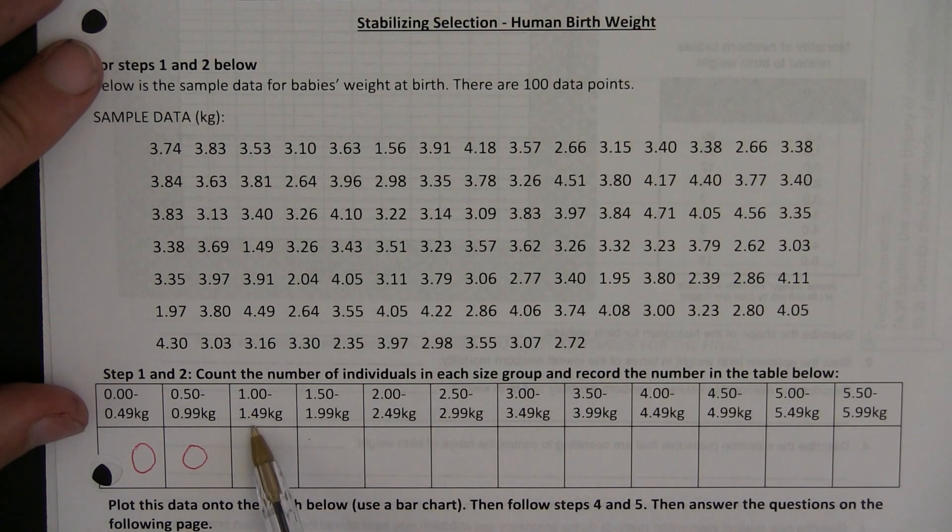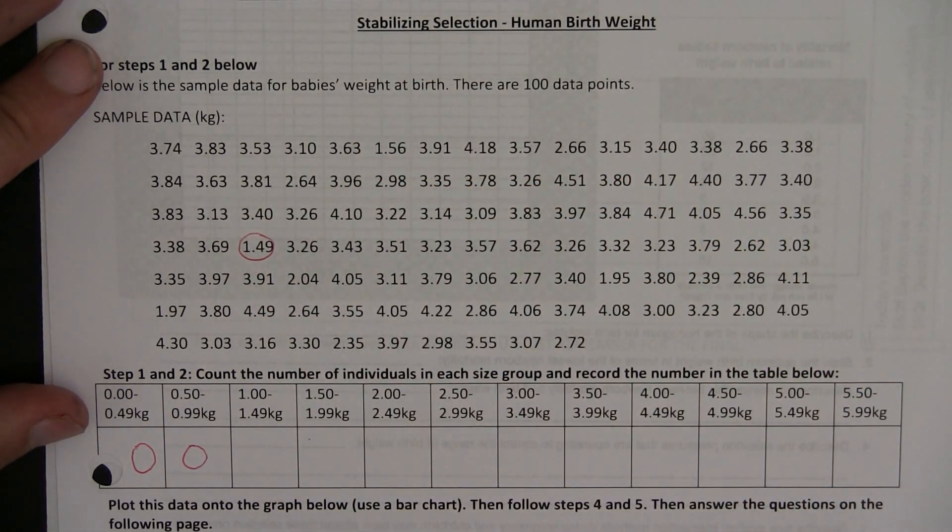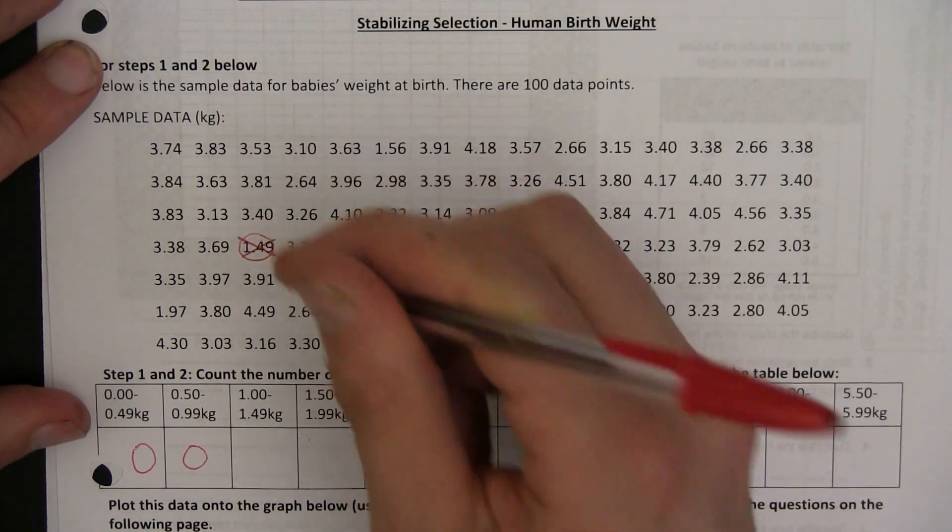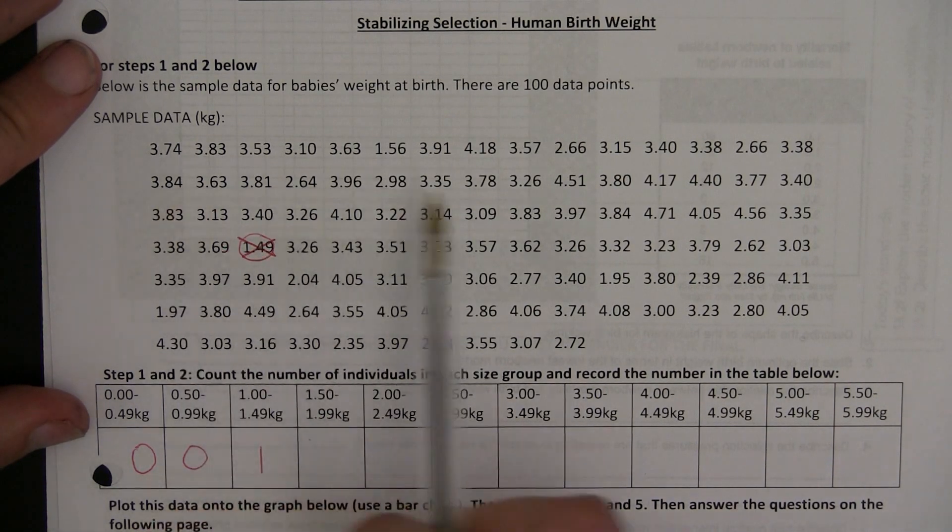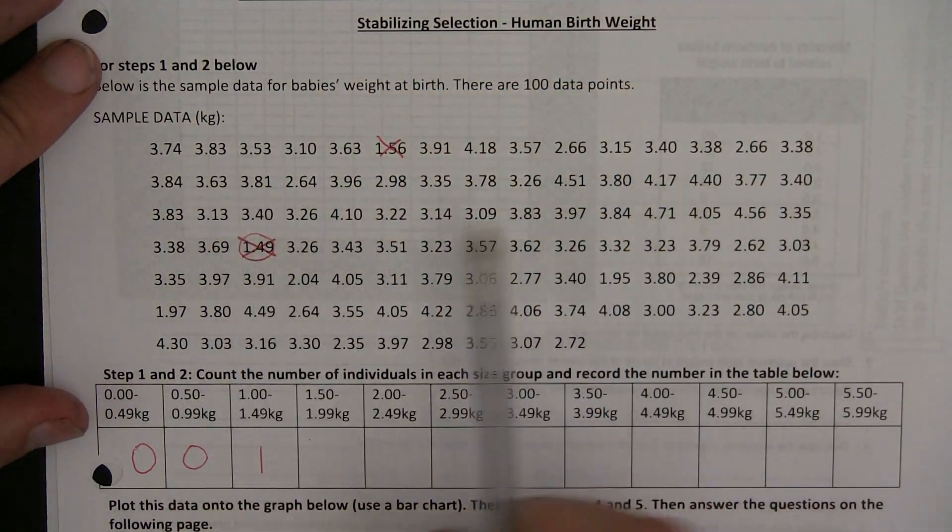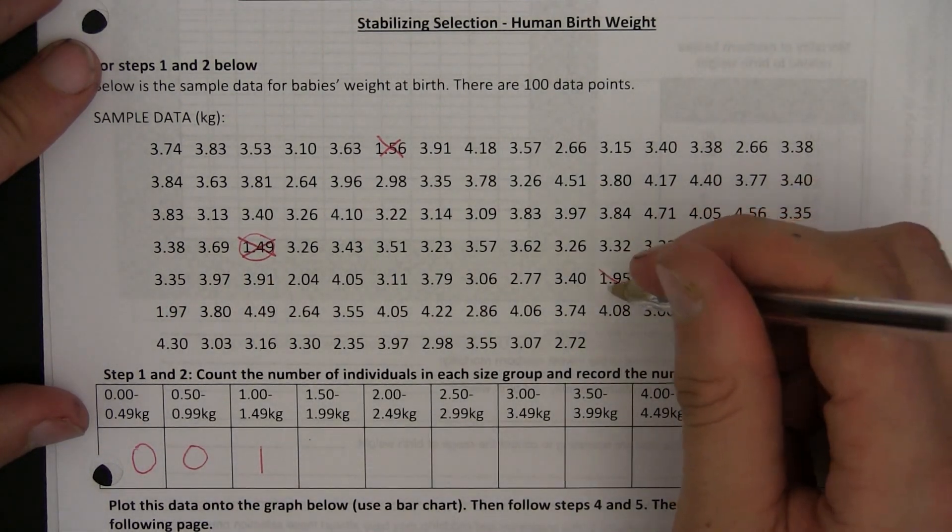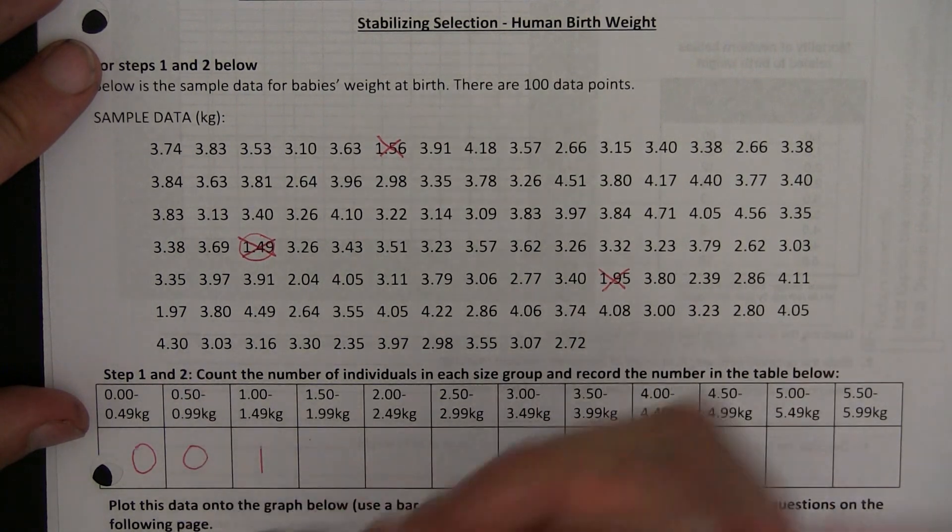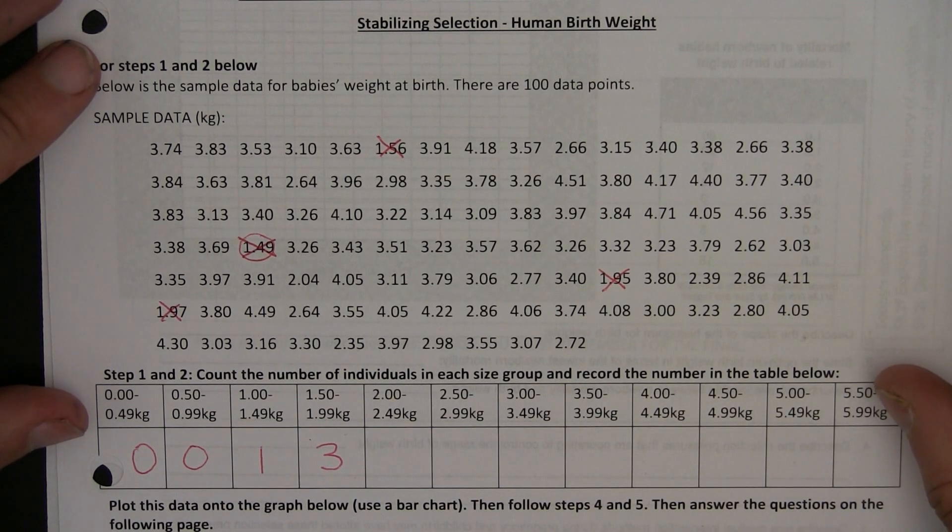Now, from 1 to 1.49 kilograms, if I go all the way through here, I see that there is one baby right here that was born at that weight. So I'm going to cross off that individual and count them as one. For the next one, 1.5 to 1.99 kilograms, when I look through, I've got one here, one. There's a second one here, two. And a third one here, three. So there are three individuals of that weight.